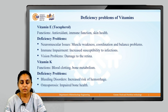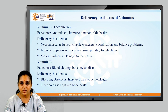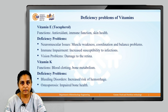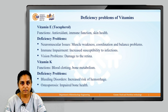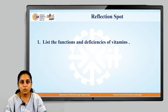Let us move on to the next vitamin, which is vitamin K. The functions of vitamin K involve blood clotting and bone metabolism. The deficiency problems associated with vitamin K are bleeding disorders, which involve increased risk of hemorrhage, and osteoporosis, which is impaired bone health.